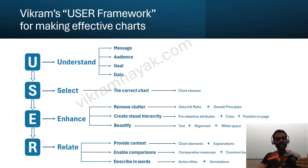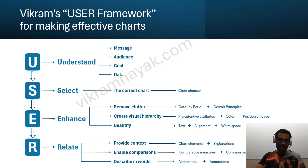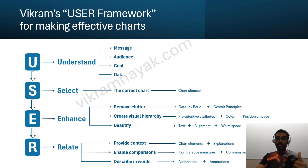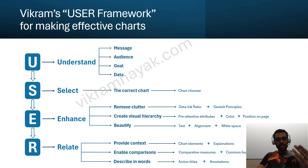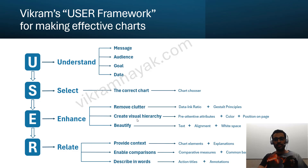Then comes the S part — Select. Based on everything we've understood, we select a chart depending on the comparisons we want to enable and the message we want to communicate. The third part is Enhance: firstly remove clutter, because by default charting software produces very cluttered charts with borders and crazy colors. We improve the data-ink ratio and use Gestalt principles to remove clutter. Then we create a visual hierarchy using pre-attentive attributes and smartly using color and position on the page.